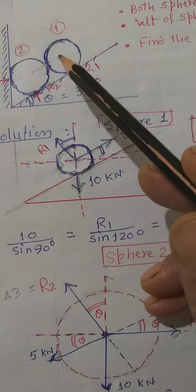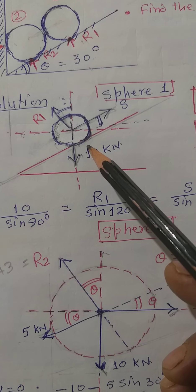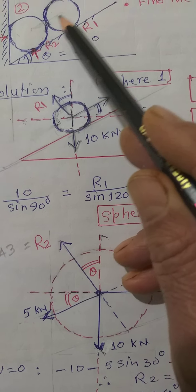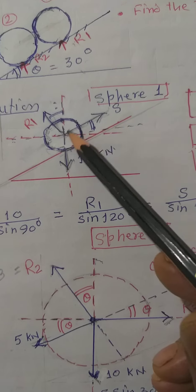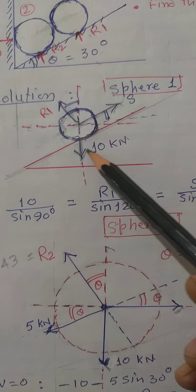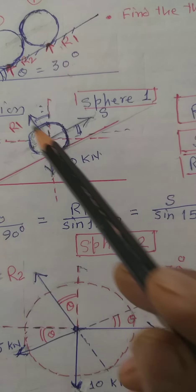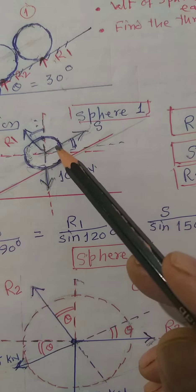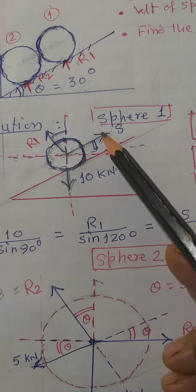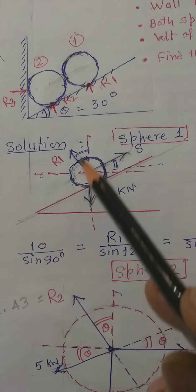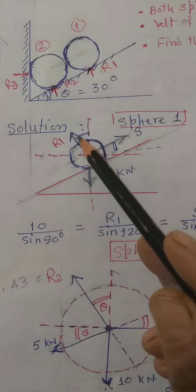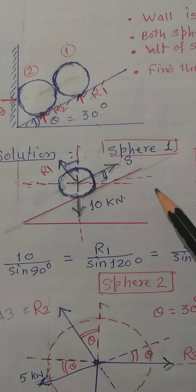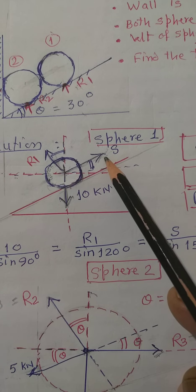We have to start from the upper sphere and draw its free body diagram. Using Lami's theorem, since both spheres are on the same level, there is a contact force acting between the two spheres, the direct downward weight force, and the reaction R1 from the wall. There are only two unknowns: the contact force S between the two spheres and the reaction R1. The angle of the inclined plate is 30 degrees. Drawing a horizontal line gives the same 30-degree angle. Both angles are known, so the remaining angles can be calculated, and R1 and S can be found.